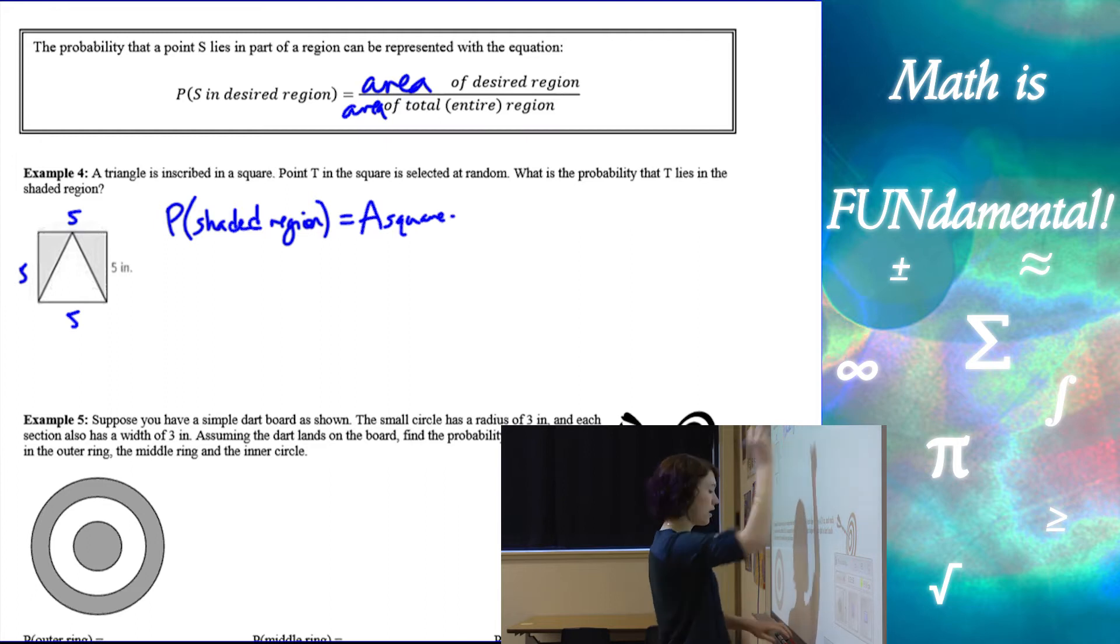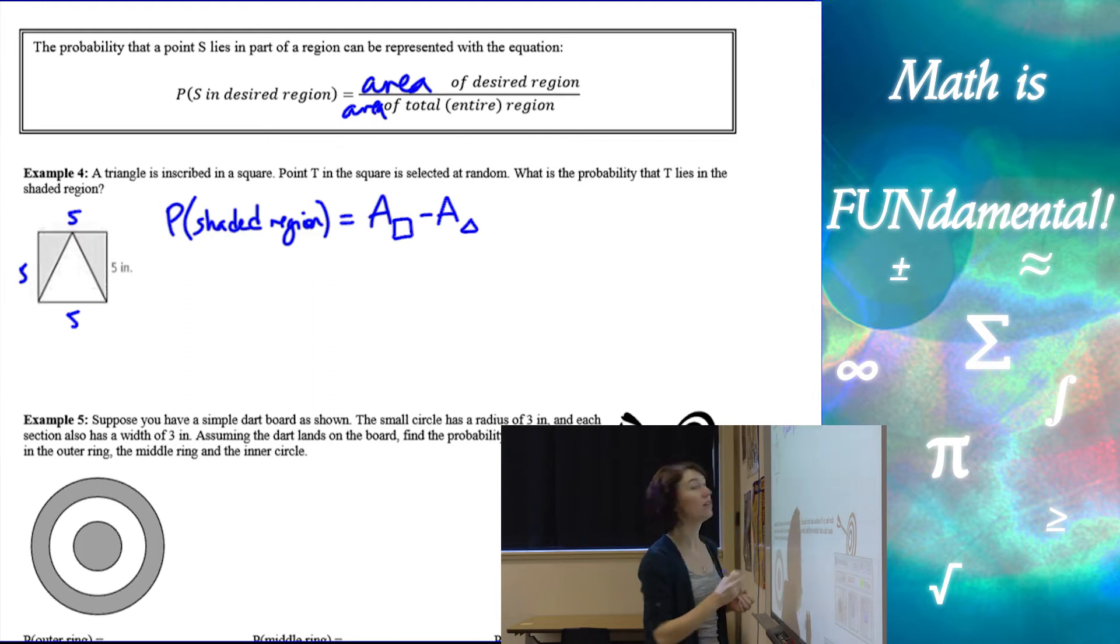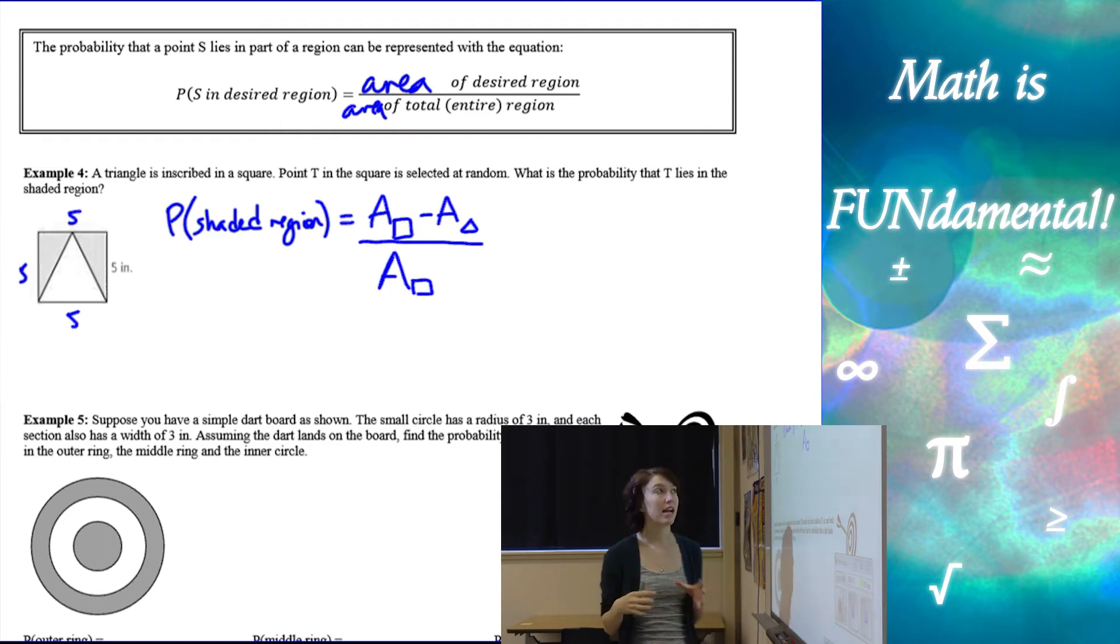I'm sorry, area of the triangle or shaded, well, okay to get our shaded region we want the area of the square minus the area of the triangle to get that shaded piece, alright, over the total area which is the square. So here's kind of a basic idea of what we're going to do.